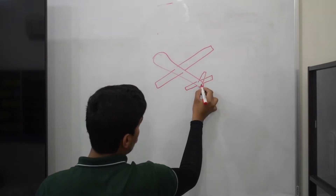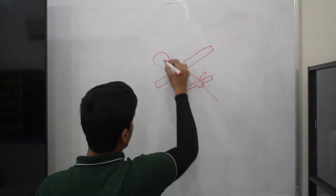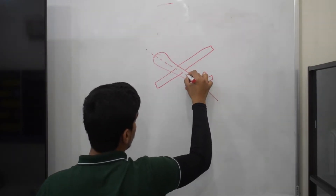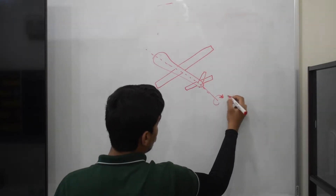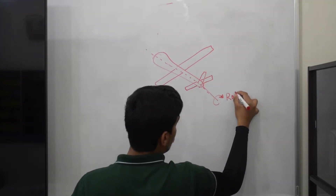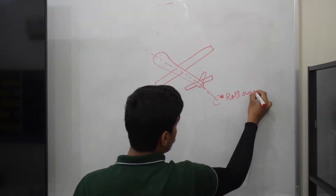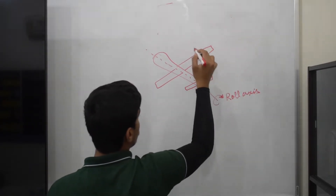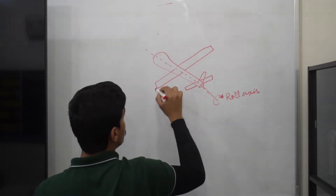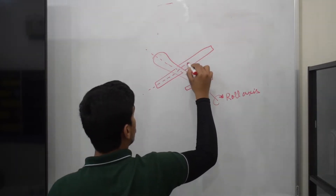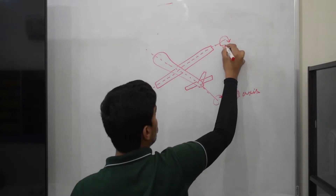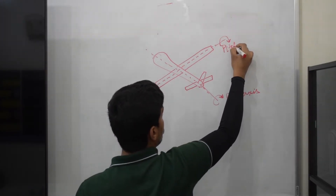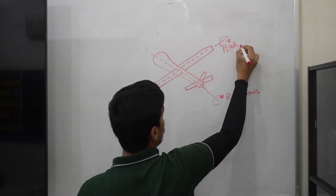Let's look at the different motion axes. The rotation around the axis that lies horizontally through the length of the plane is called the roll axis. This would feel like shifting weight to the sides if you were in the aircraft. When the aircraft moves around the axis that lies along the width of the aircraft, it is called pitch motion.